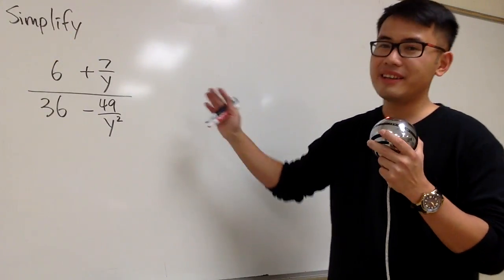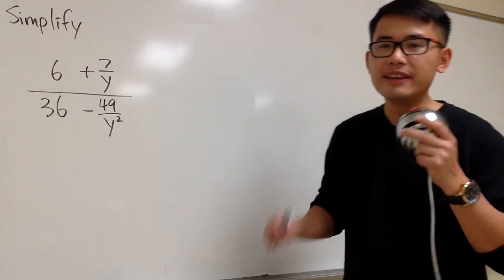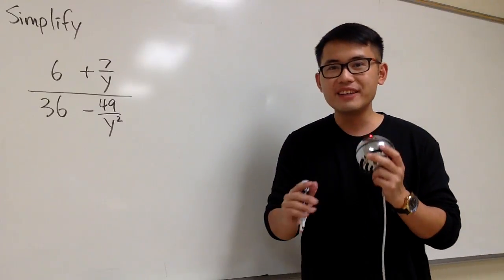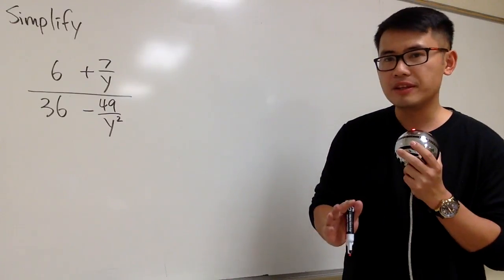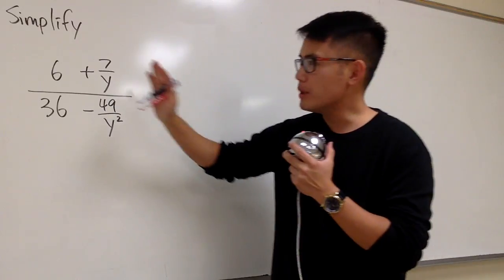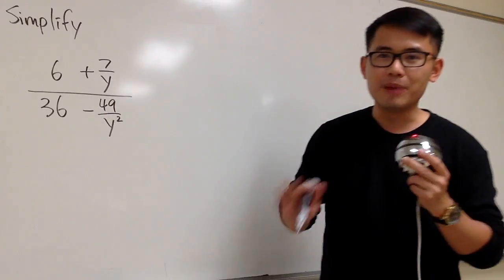In this question, we are going to simplify this complex fraction. And the strategy is, we are going to first identify what the lowest common denominator is for the little fractions, and then we'll multiply everything by the lowest common denominator.